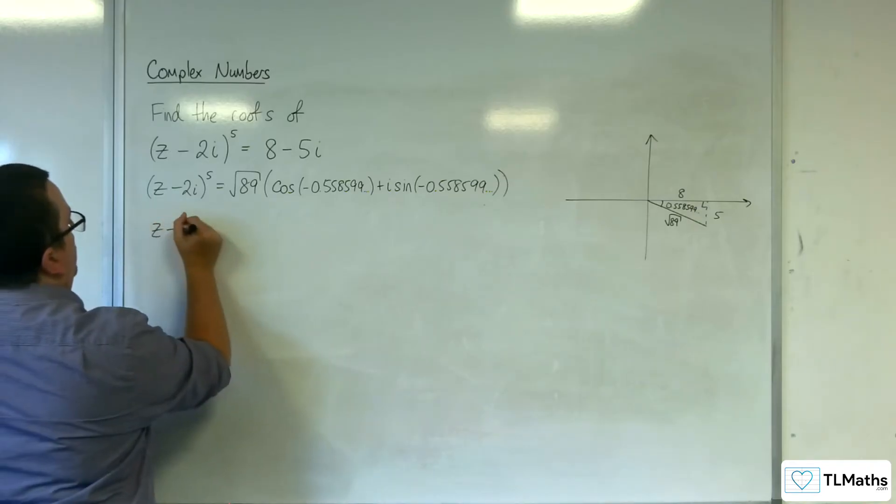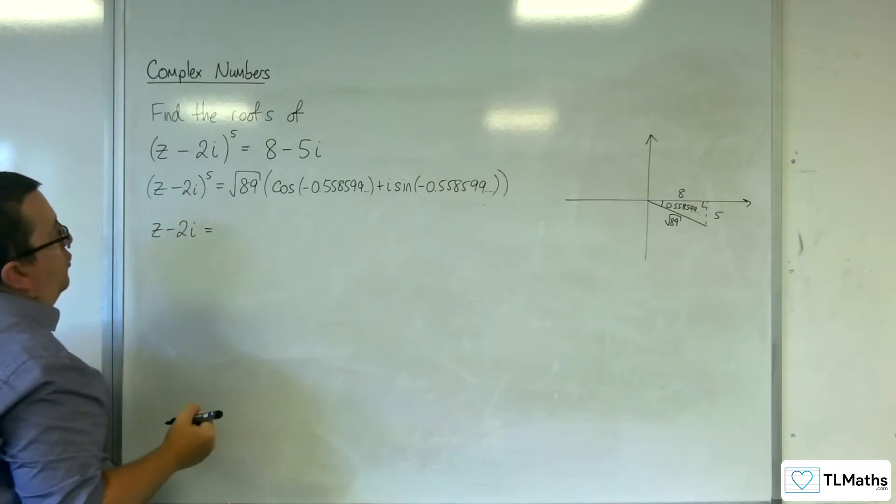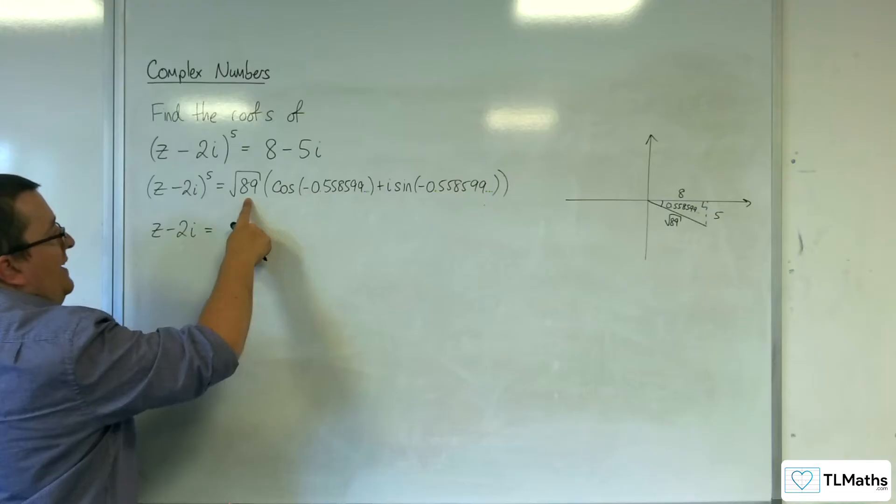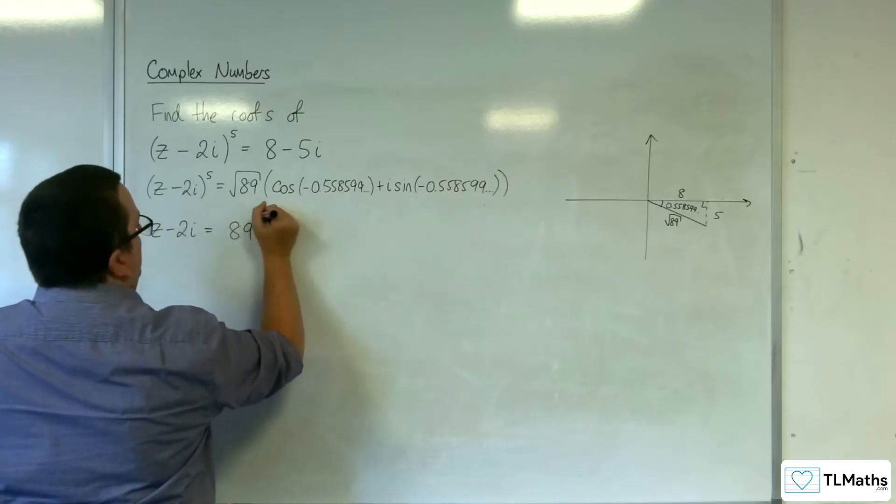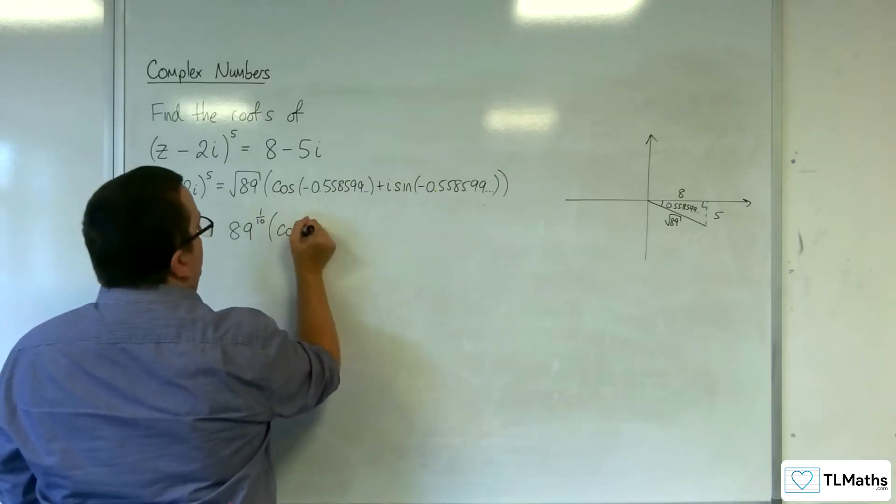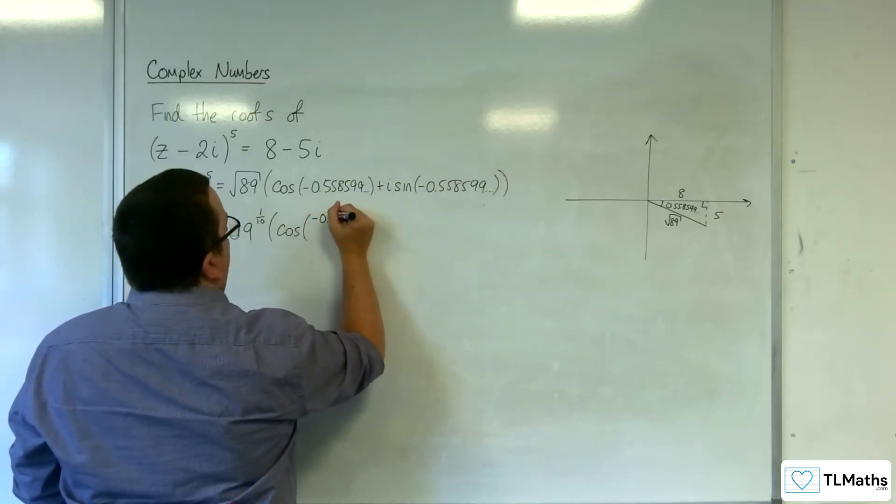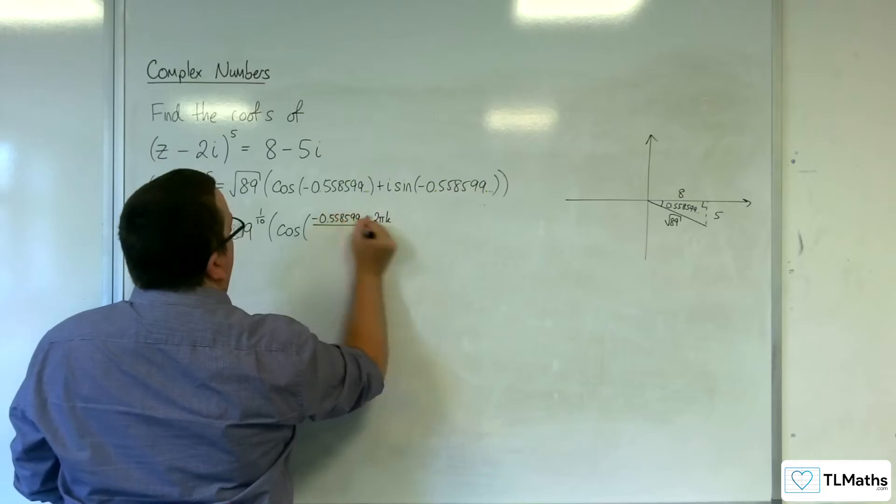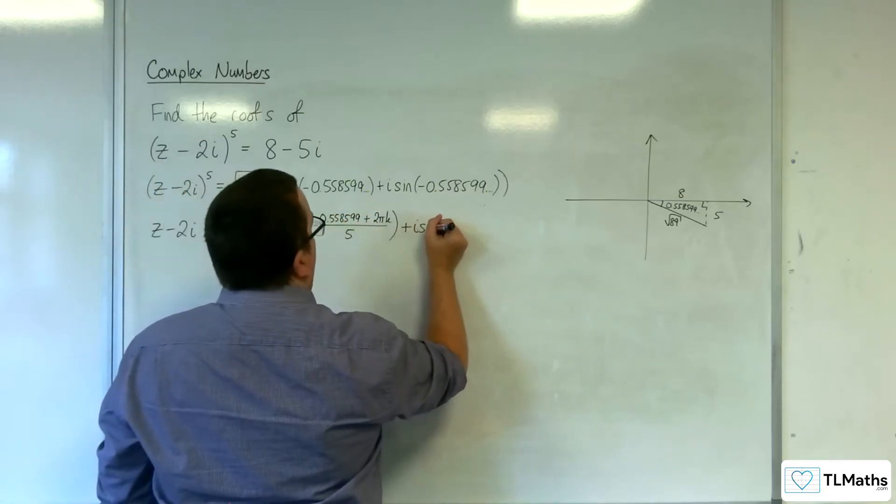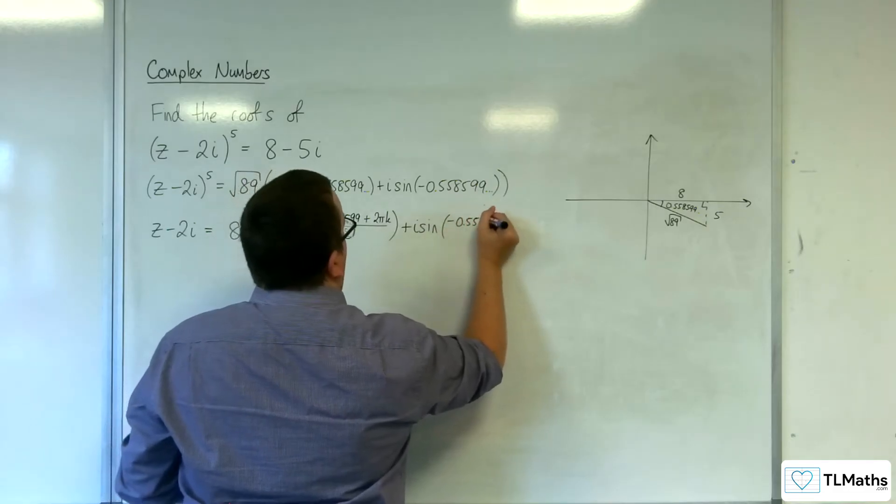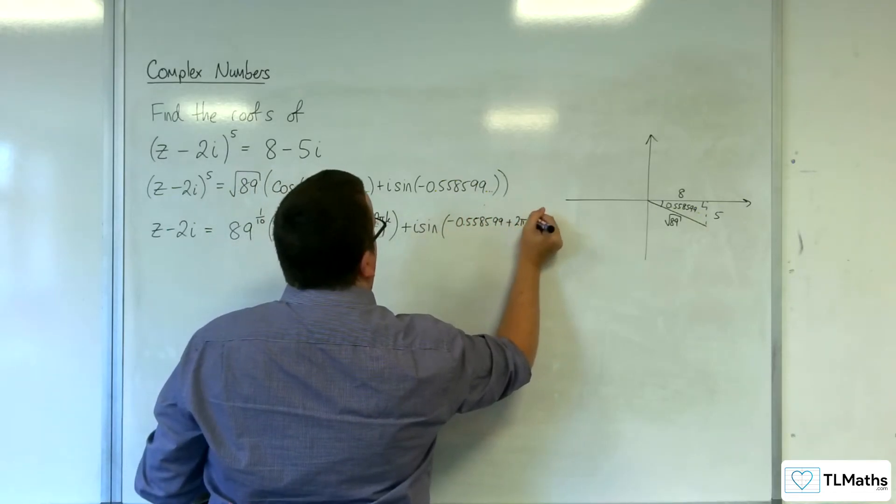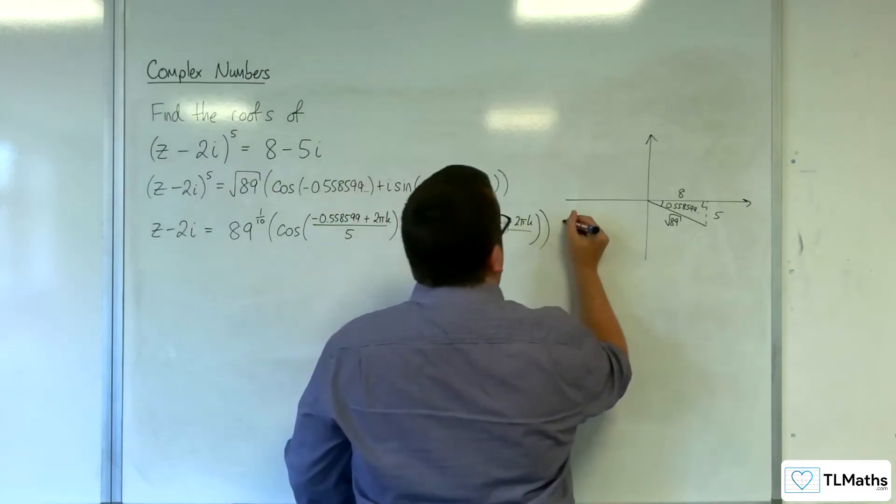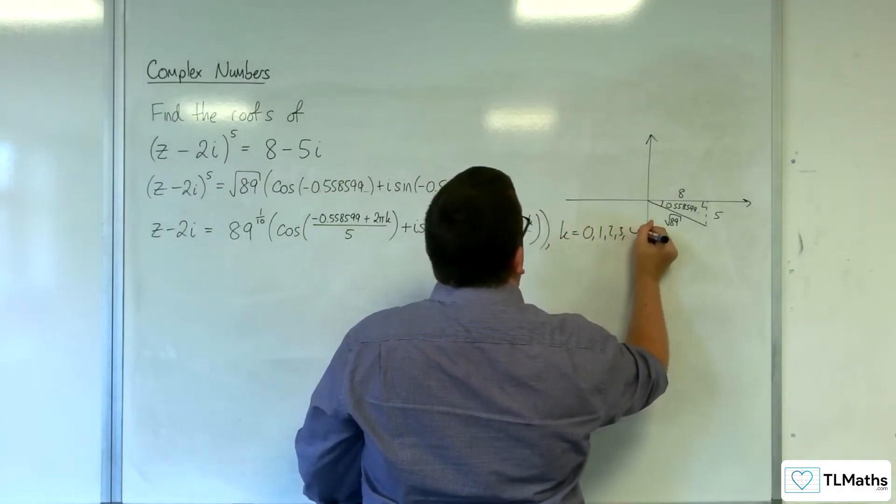So z take away 2i is going to be of the form of the fifth root of this. So we've got the fifth root of 89, which is now going to be 89 to the power of 1 tenth, times by cosine of your angle minus 0.558599 plus 2 pi k over n, which is 5, plus i sine of minus 0.558599 plus 2 pi k over 5, where k is equal to 0, 1, 2, 3, and 4.